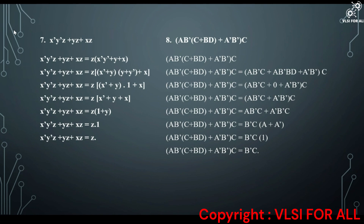Next question: X̄ȲZ plus YZ plus XZ. Taking Z as common: Z(X̄Ȳ plus Y plus X). Applying the distributive law to the first two terms inside the bracket: Z(X̄ plus Y)(Ȳ plus Y) plus X. Since Ȳ plus Y = 1, we get Z(X̄ plus Y · 1 plus X) = Z(X̄ plus Y plus X). Since X plus X̄ = 1, we get Z(1 plus Y). Since 1 plus Y = 1, our answer is Z. Hence the Boolean expression simplifies to Z.